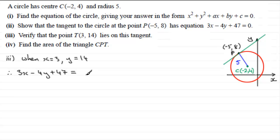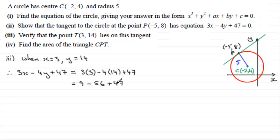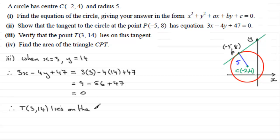We put 3 multiplied by the x-coordinate, which is 3, minus 4 times the y-coordinate, which is 14, and then plus 47. Working this out, we've got 9 minus 56 plus 47. 9 minus 56 is minus 47, plus 47 gives us zero. Therefore, T, which has coordinates (3, 14), lies on the tangent.